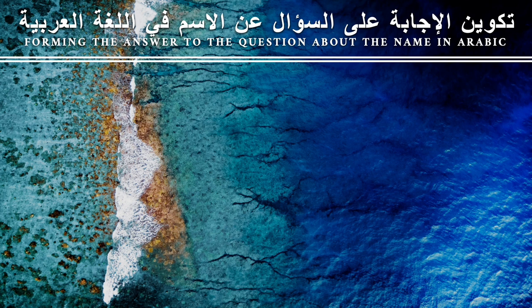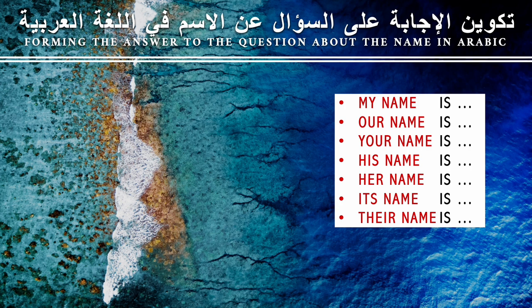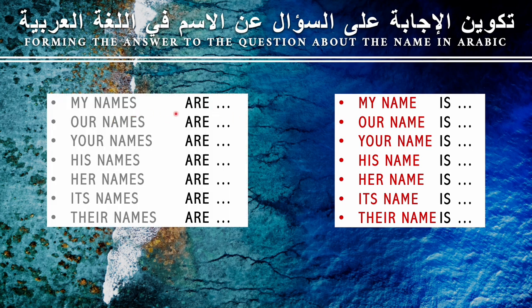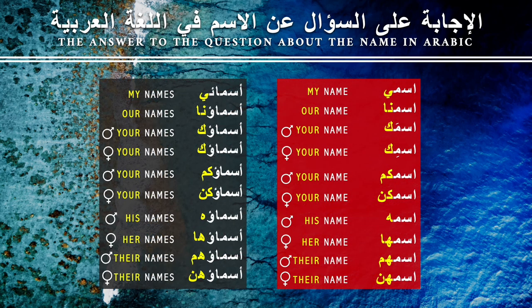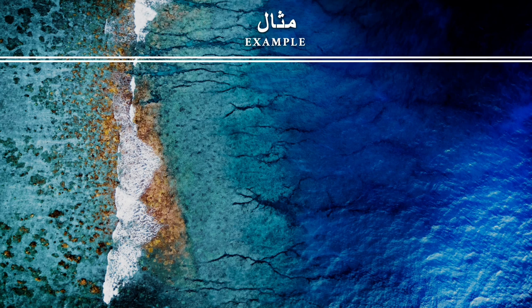Now we know how to form the question about the name. What about the answer? Honestly, it is very easy. It's the exact same concept — there is no need to use the auxiliary verb 'to be' in present simple tense in Arabic, which is normally hidden. Instead of saying 'my name is Hannah,' you just say in Arabic 'ismi Hannah.' The same applies to 'are' — if you say 'my names are Hannah and Mariam,' in Arabic you just say 'asma'i Hannah wa Mariam' without using the verb 'to be.'